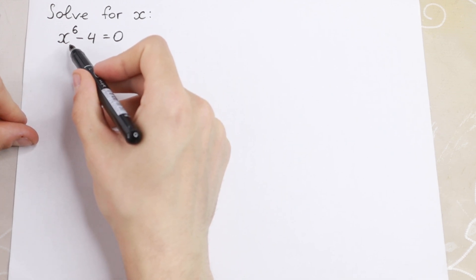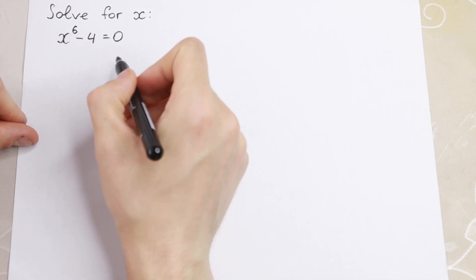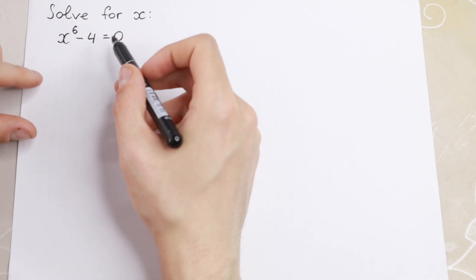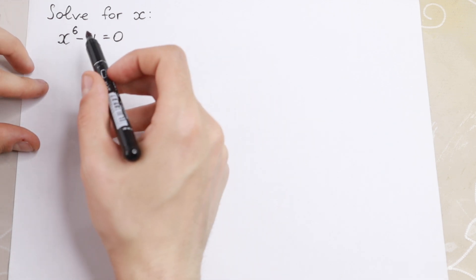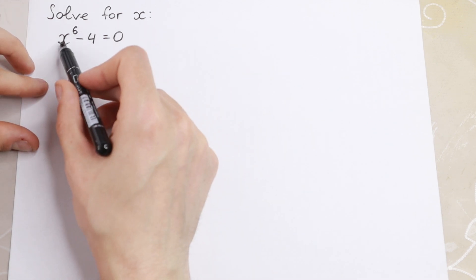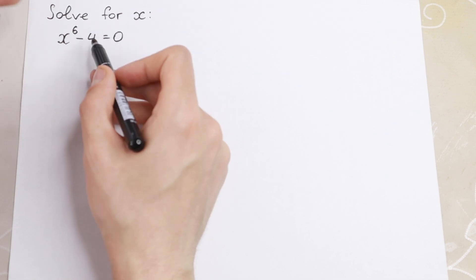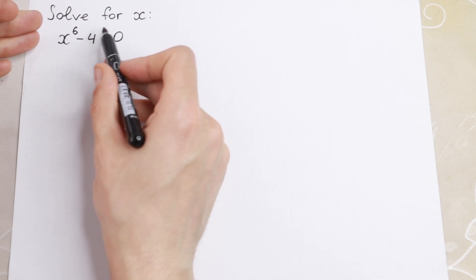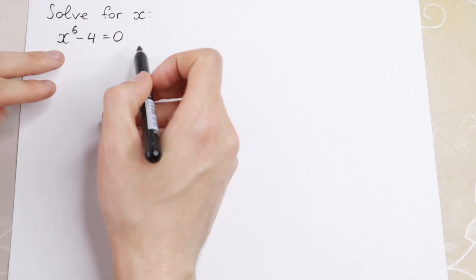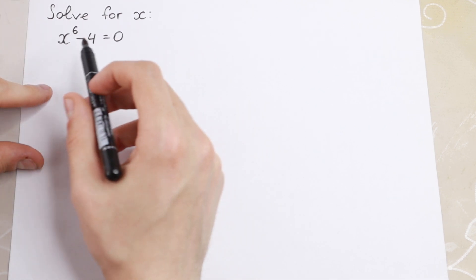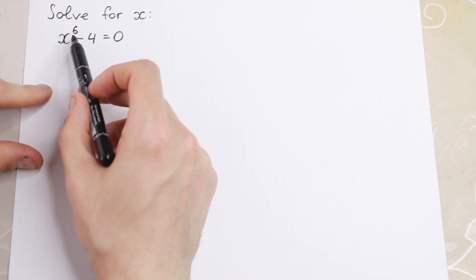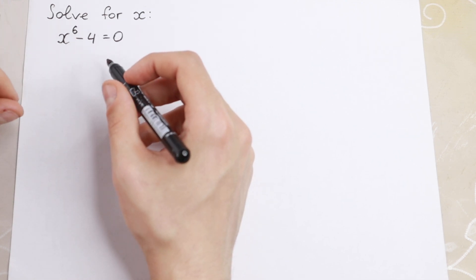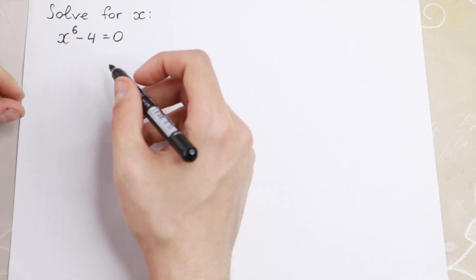So we have x to the 6th power minus 4. On the first side this equation is an easy one because it's not really hard. We have x and we have a constant, so we need to bring this 4 on the right hand side and solve it. But we have 6 right here, so we will have 6 roots.